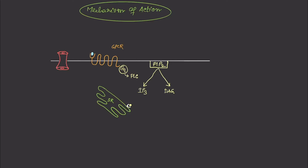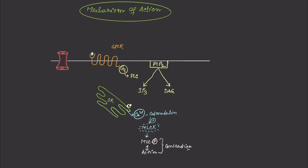Inside the muscle cell, the storehouse of calcium is the sarcoplasmic reticulum, which has a specific receptor for IP3. When IP3 binds with that receptor, calcium ions are released from the sarcoplasmic reticulum, which then bind with calmodulin to form the calcium-calmodulin complex. This complex activates myosin light chain kinase, which phosphorylates the myosin light chain, which then interacts with actin to cause smooth muscle contraction.